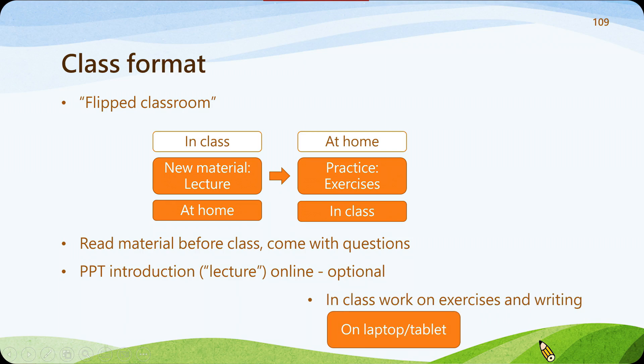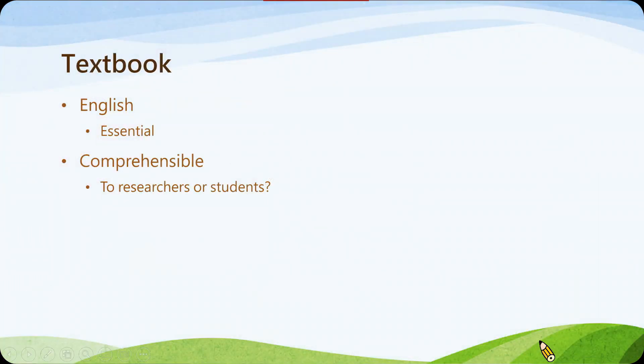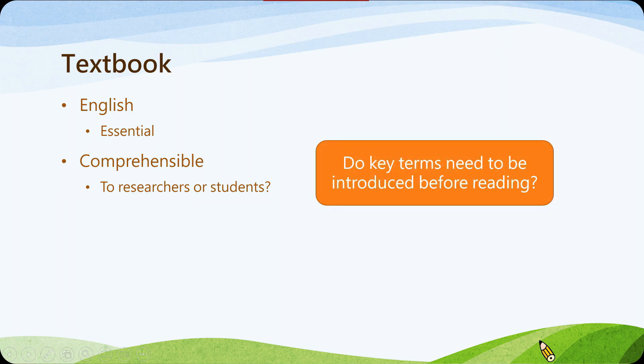This also means students will often need to bring some sort of electronic device to class to work on. We mentioned the textbook — it needs to be in English and at the right level so it's comprehensible. You also need to think about whether the textbook does a good job of introducing the terms, or whether you need to introduce them even before they read.